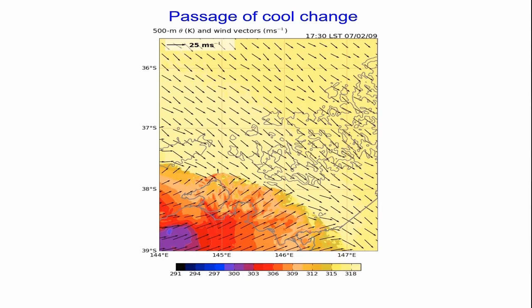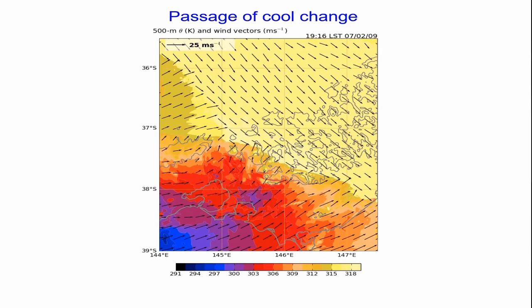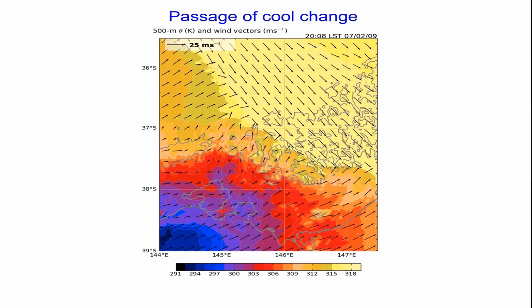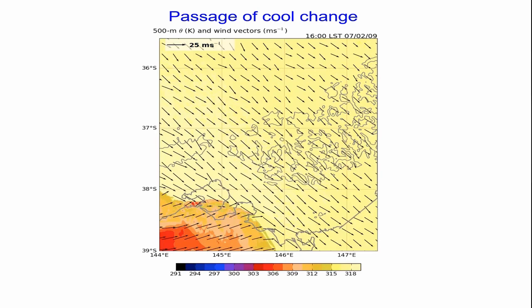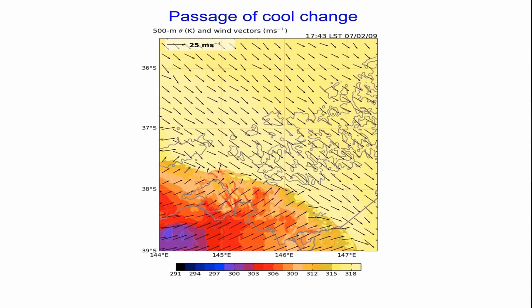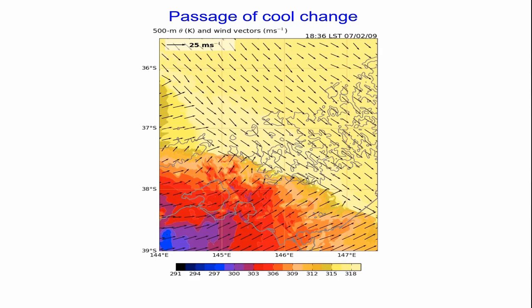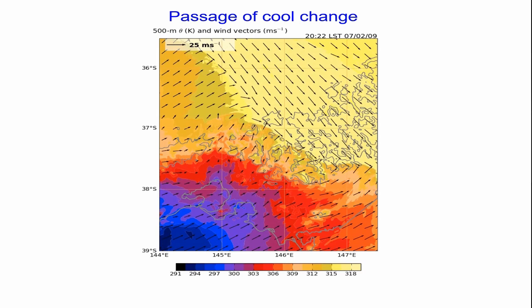Here's an animation showing the passage of the cool change from the model. What's shaded is the potential temperature and wind vectors at 500 metres above the ground. As we step this forward, you can see the complexity of the cool change and the variability of the winds — northerlies and northwesterlies before the cool change, then the southwesterly change coming through. Along the edge of the cool air there's a lot of variability in the winds. The cool air is funnelled around the terrain, producing a complicated structure — the cool change is not a straight line. You see cool air being funnelled through Gippsland and up the valleys before going over the mountains.